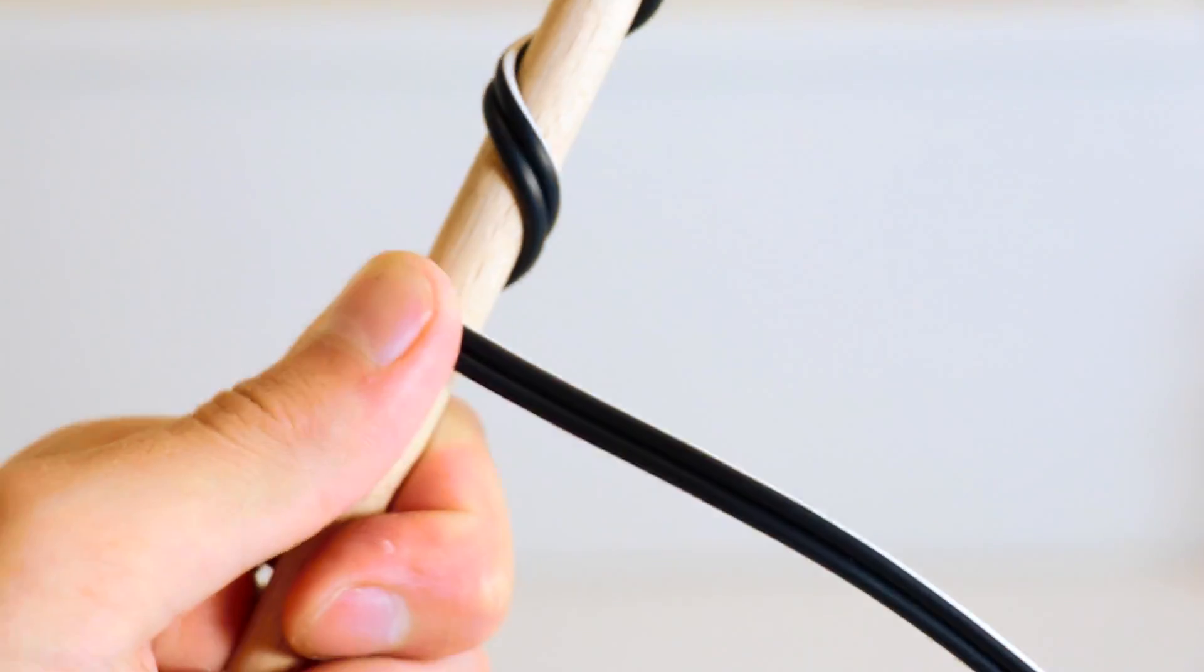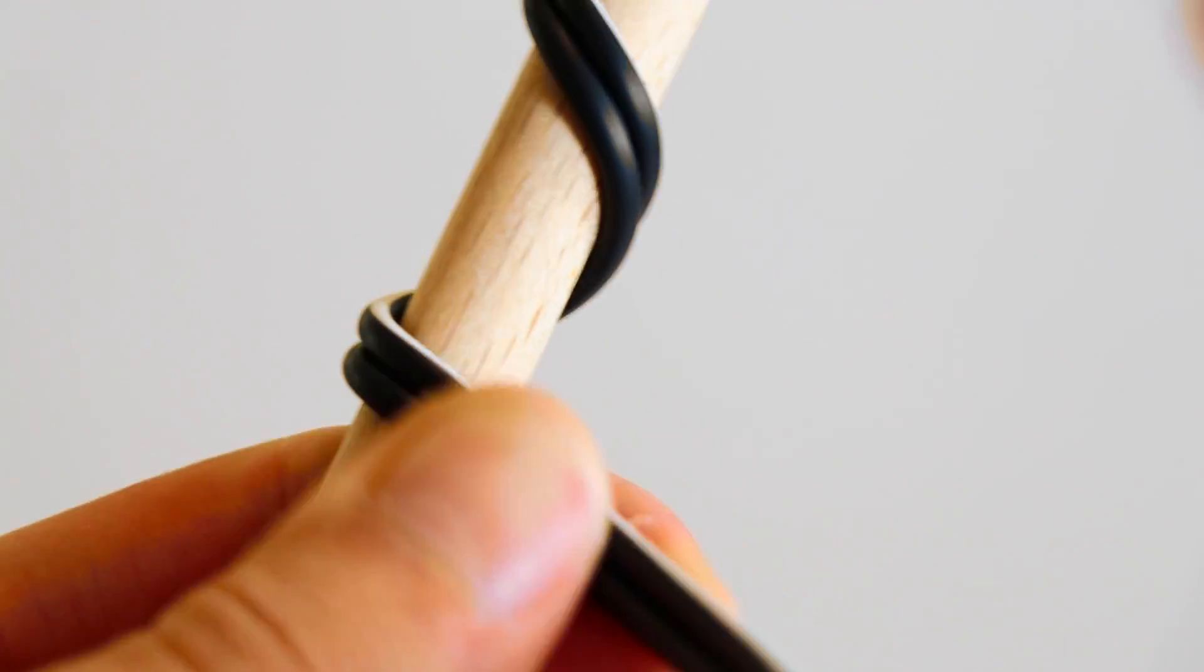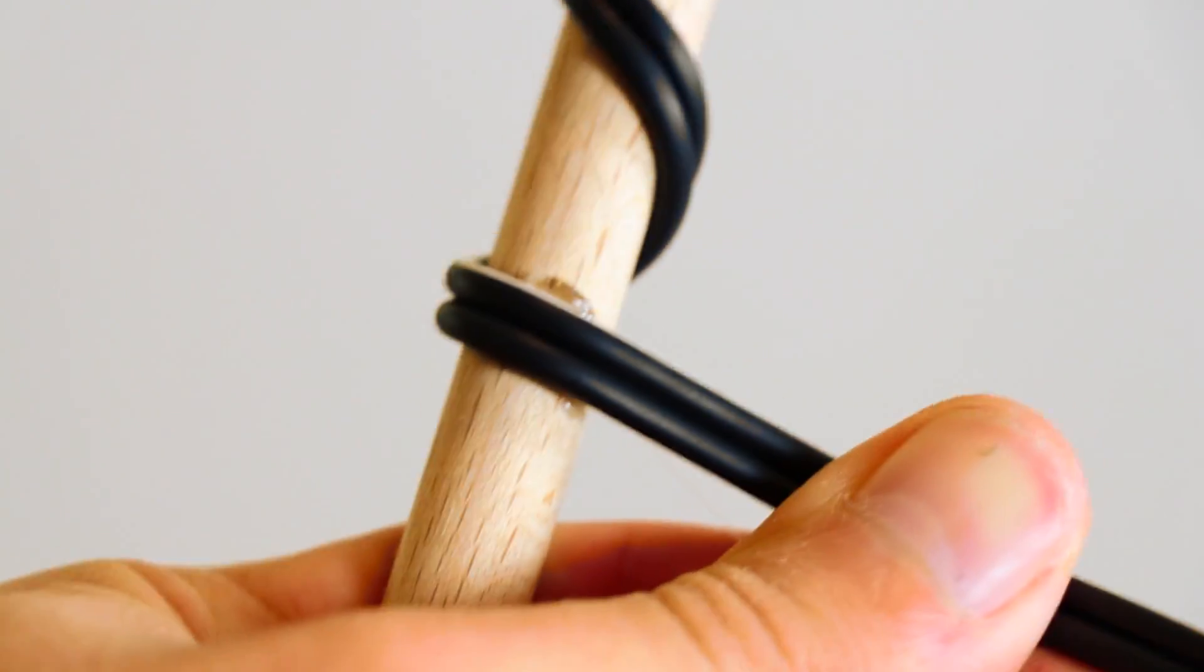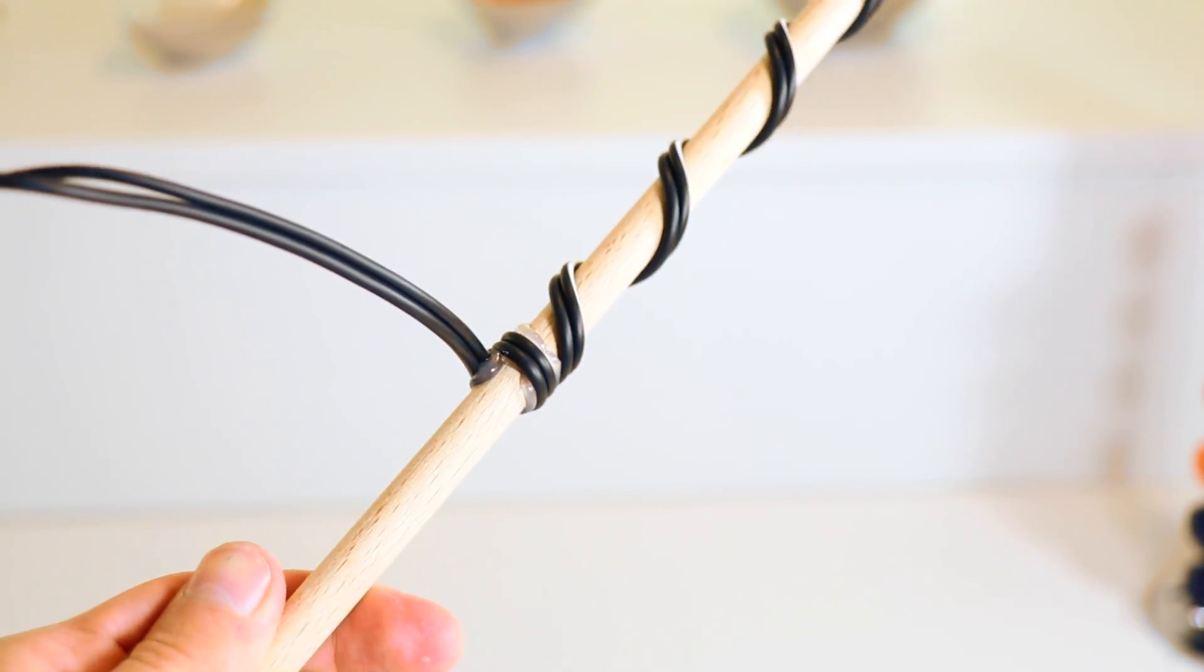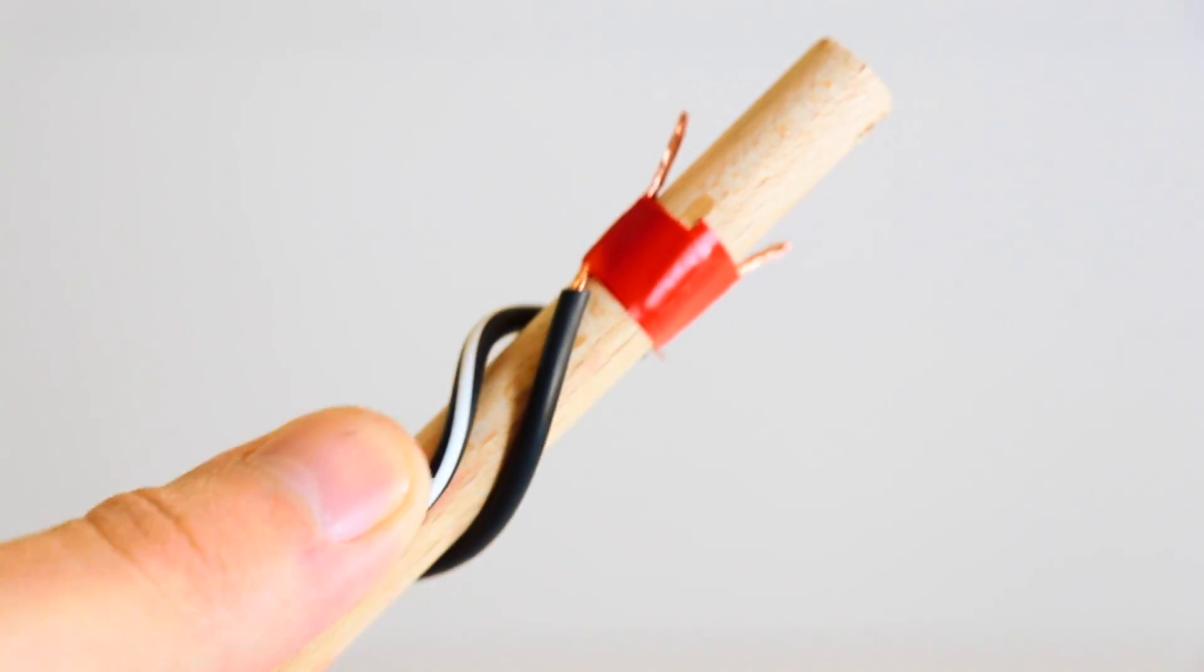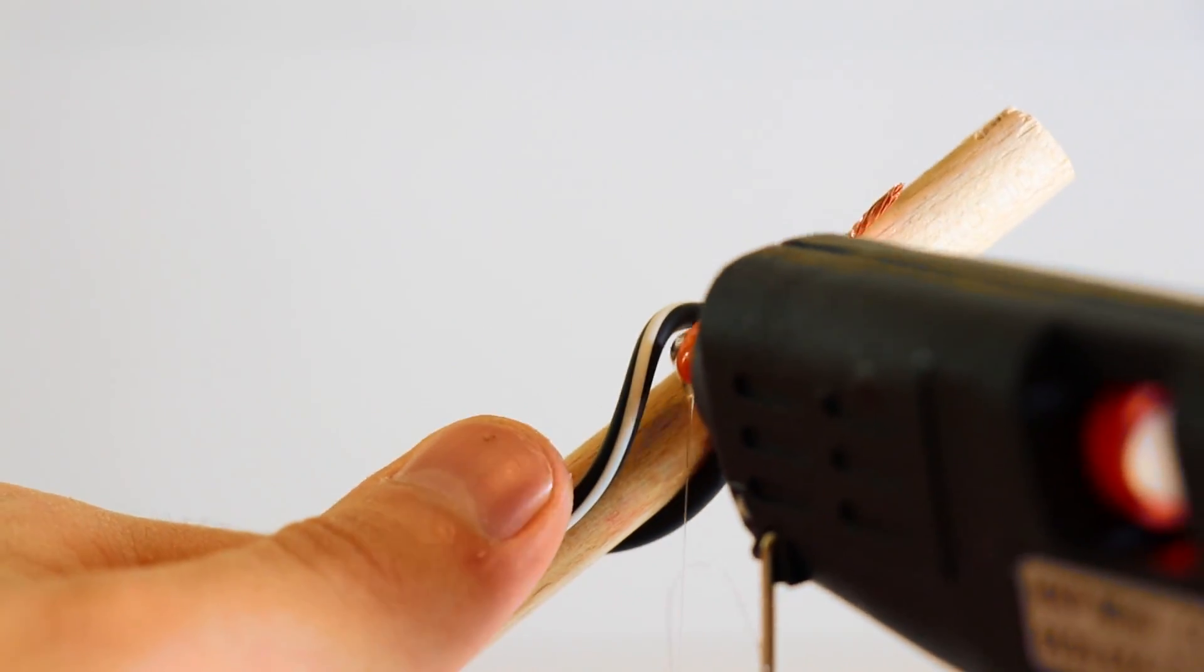Then hold the wire in place with your finger and using a small bead of hot glue secure it into place. You can also secure the top part with a small bead of hot glue.